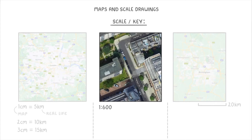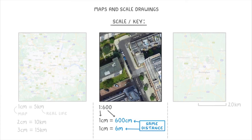This second one, one to 600, is basically a ratio, and means that everything on the image is 600 times smaller than the real thing. Or in other words, every one centimetre on the image would be 600 centimetres in real life. So we could rewrite it as 1 centimetre equals 600 centimetres, or even 1 centimetre equals 6 metres, because 600 centimetres and 6 metres are the same distance.